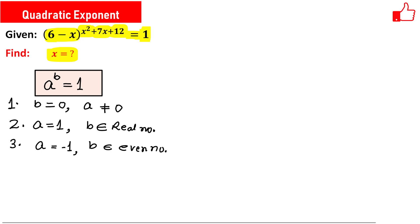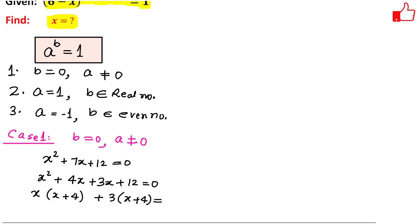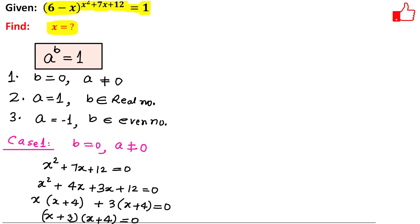We will now discuss these three cases separately. In Case 1, b equals 0 but a is not equal to 0. So x squared plus 7x plus 12 equals 0. Factorizing: x squared plus 4x plus 3x plus 12 equals 0, which gives x(x plus 4) plus 3(x plus 4) equals 0, so (x plus 3)(x plus 4) equals 0.